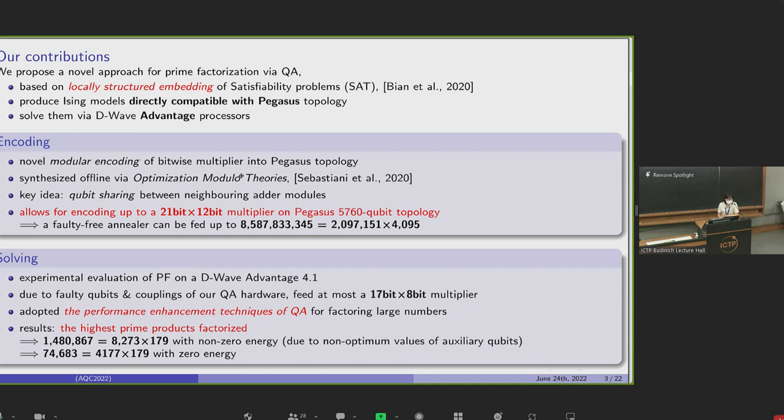However, in real architecture exist faulty qubits and couplings. In our experiments, we tested the multiplier encoding of up to 17-bit times 8-bit for D-Wave Advantage 4.1 to do prime factorization. We demonstrate that the pulsed annealing and the reversed annealing, two performance enhancement techniques of quantum annealing, can find solutions of the prime factorization. These two integers are the two examples factorized with non-zero energy and with zero energy respectively.